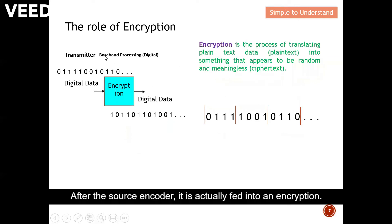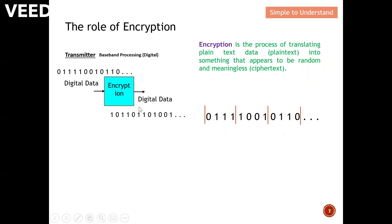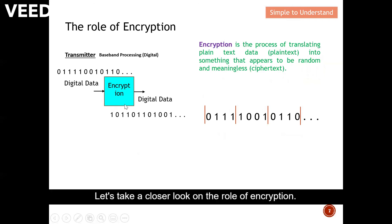After the source encoder, it is actually fed into an encryption. After the encryption, you can see that another set of messages actually appeared. So let's take a closer look on the role of encryption.